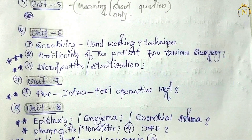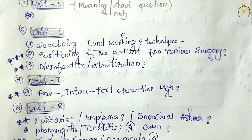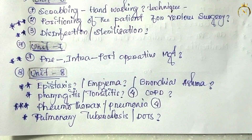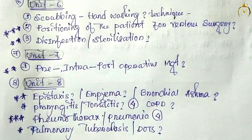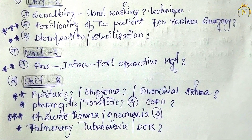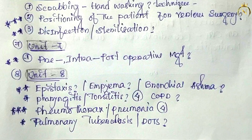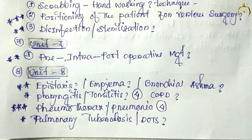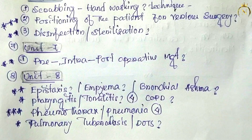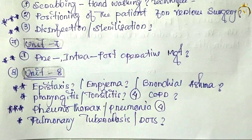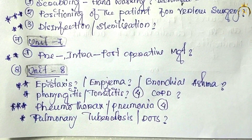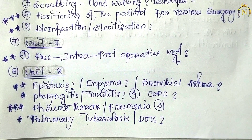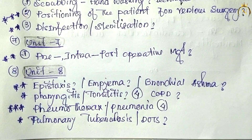From unit seven, only one question will come covering the full unit: pre-operative — before surgery, what are the management and nursing responsibilities; intra-operative — during surgery, what are the management and nursing responsibilities; and post-operative — after surgery. These three — pre, intra, and post-operative management — make up the full unit, and only one question will come from pre, intra, or post-operative.